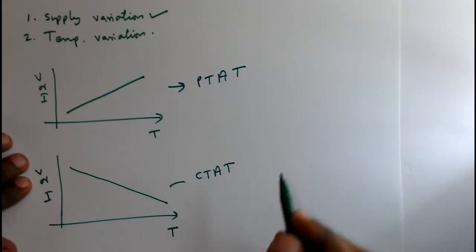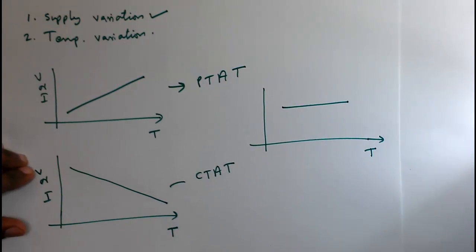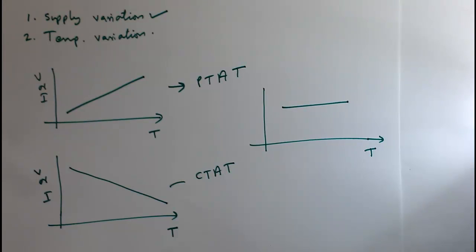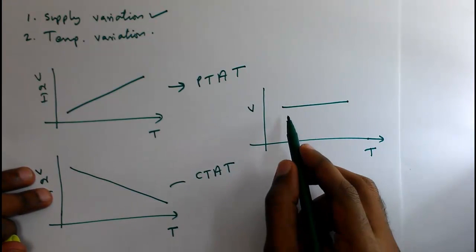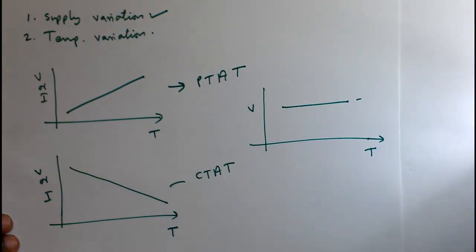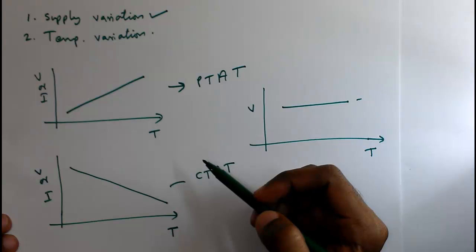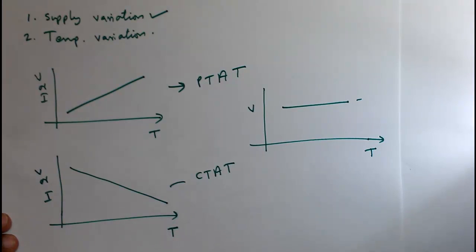CTAT stands for Complementary To Absolute Temperature. There is no voltage or current that we can see which is constant with respect to temperature. If some voltage or current were found which is constant with respect to temperature, then we could use them as a reference. But unfortunately, there is nothing which is constant with respect to temperature. Every voltage we come across will either increase or decrease — any voltage is either PTAT or CTAT.